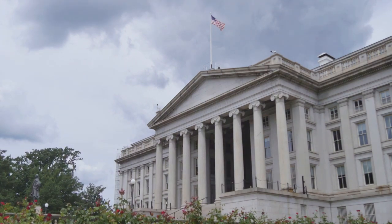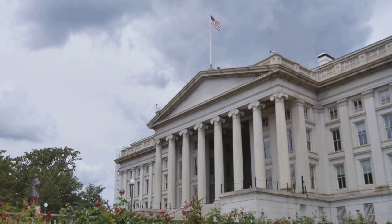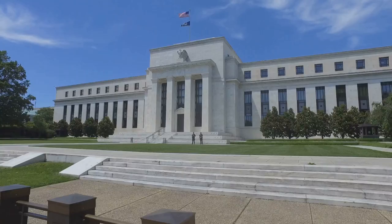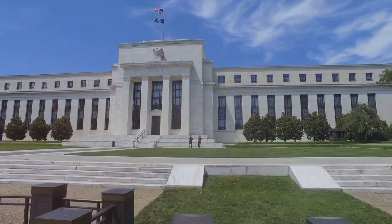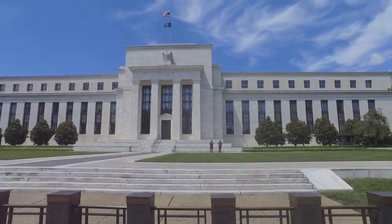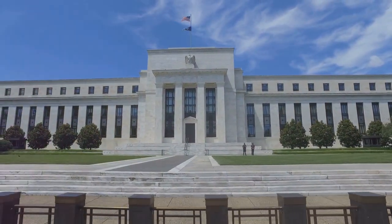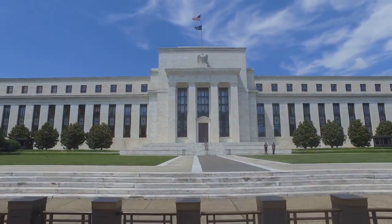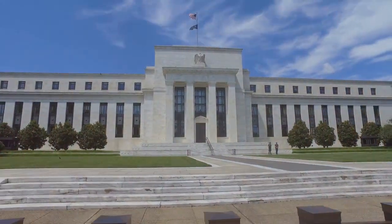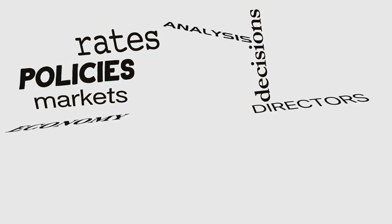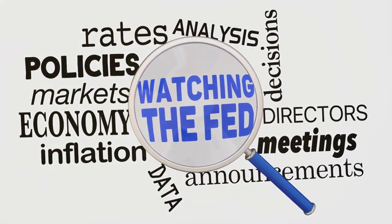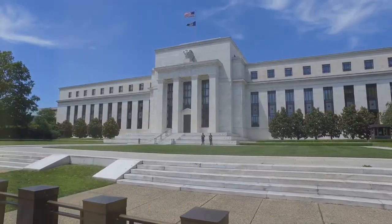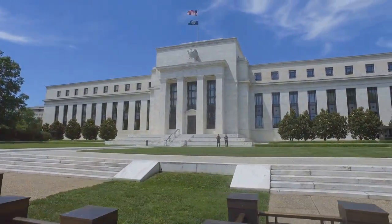The structure of the Federal Reserve is unique. It consists of a board of governors located in Washington, D.C., 12 regional Federal Reserve banks spread across major cities in the U.S., and a Federal Open Market Committee. The board of governors, appointed by the president and confirmed by the Senate, oversees the entire system. The Fed has several key functions: it conducts the nation's monetary policy to promote maximum employment, stable prices, and moderate long-term interest rates in the U.S. economy.